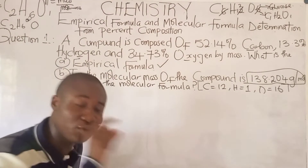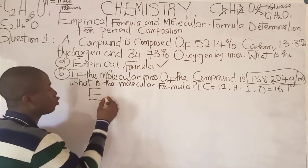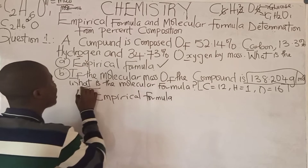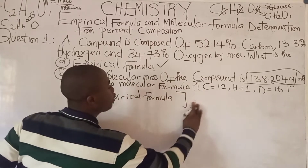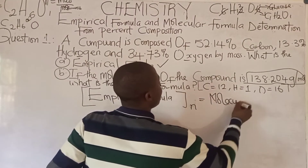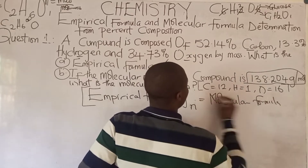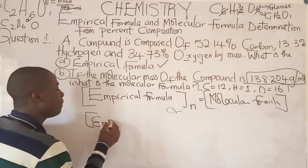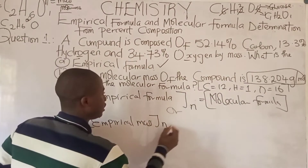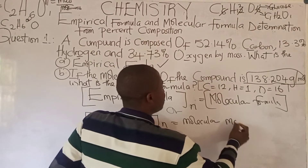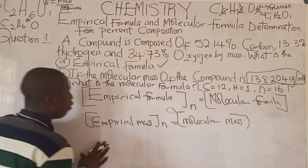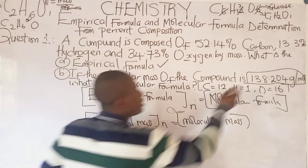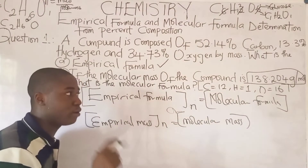Before we calculate the molecular formula, there is a formula we must take note of: empirical formula × N = molecular formula. This can also be written as empirical mass × N = molecular mass. We've already determined the empirical formula, and the molecular mass is given as 138.204 grams per mole.